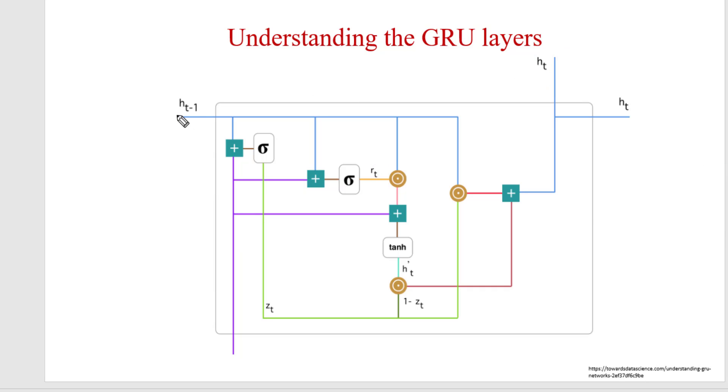So this is previous state coming from the previous time stamp. Now we have to calculate h t. So this is actually the calculation, this is actually the output that need to be generated as a part of calculation for this time stamp.